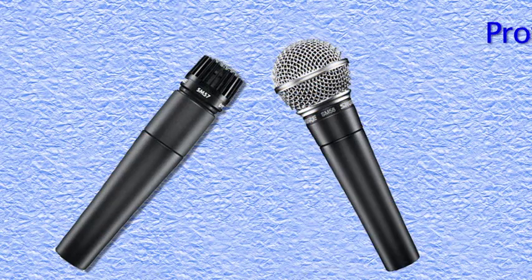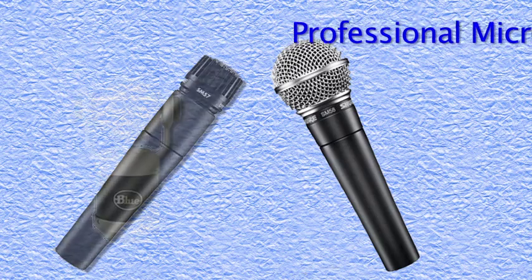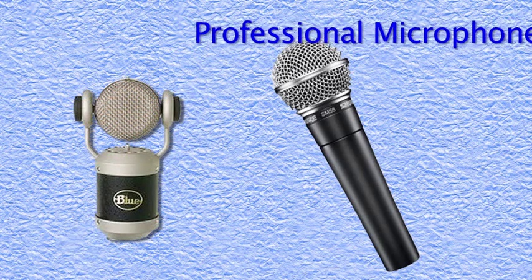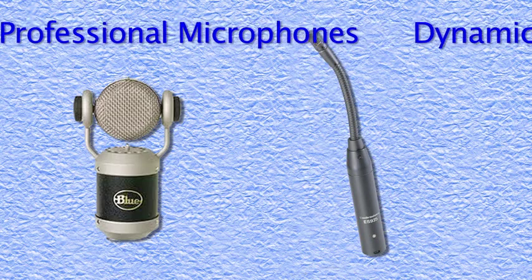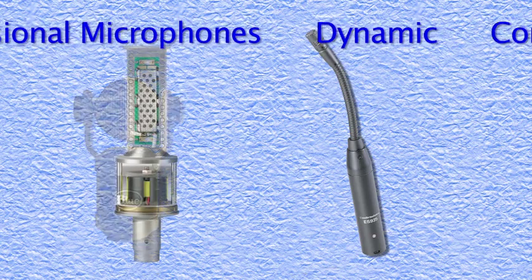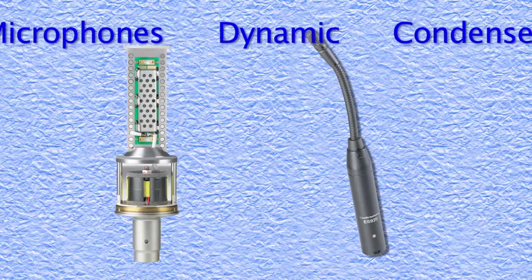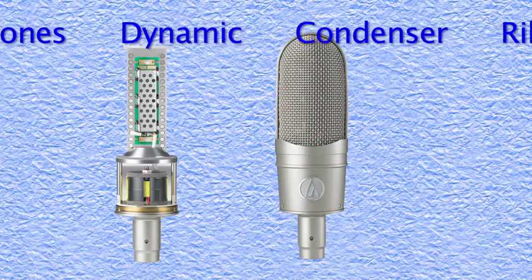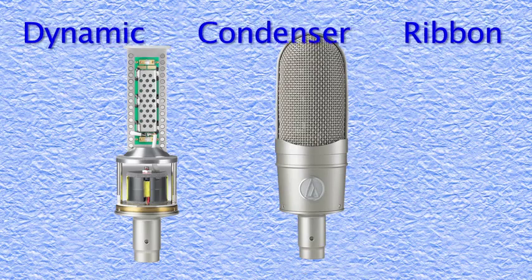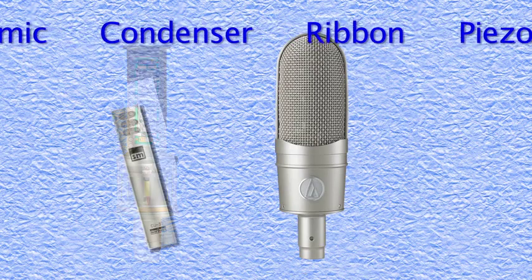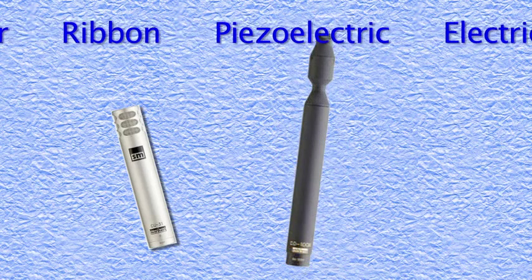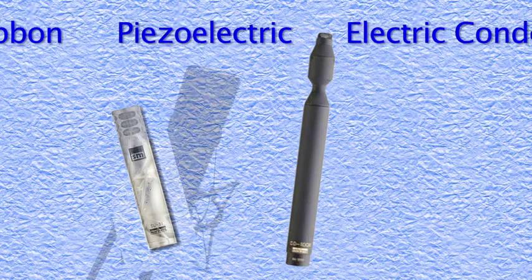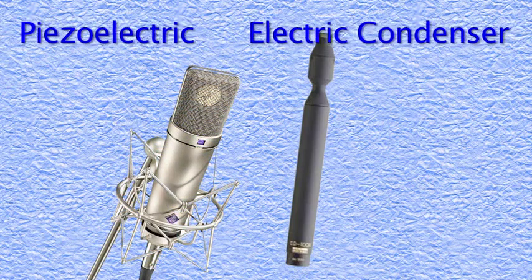Microphones are used every day to convert acoustic waves, sound, into an electrical signal so that it can be recorded, amplified, and broadcast. In pro audio applications, there are three basic types of microphones: dynamic, condenser, and ribbon. Each has its own unique qualities that make it suitable for different environments and the type of sound to be picked up.